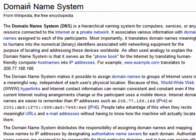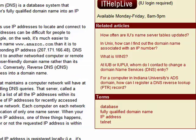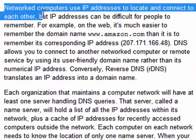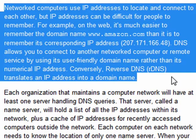There's a whole article on the domain name system in Wikipedia — links in the show notes. But what DNS does is that, as it says here, it makes it easier for people to be able to connect to computers on a network by using their easier-to-remember domain name rather than an IP address like 207.171.166.48.